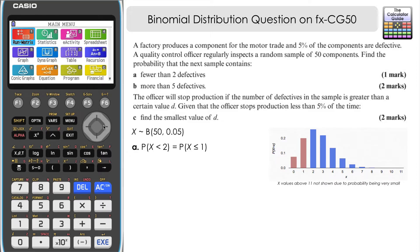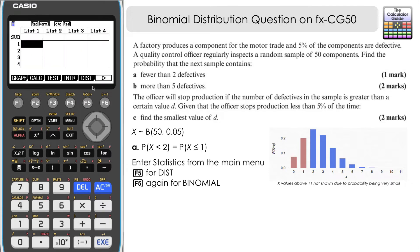Okay, so on the CG50, we want to go to statistics mode and then we want F5 for distribution and F5 a second time to select binomial. Now, because we want essentially equal to one or less or fewer than two, what we're after is the binomial CD, binomial cumulative distribution to help us answer this one. So it's F2.